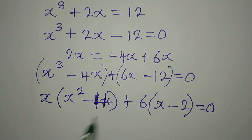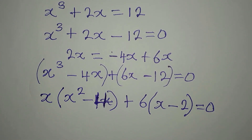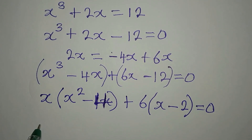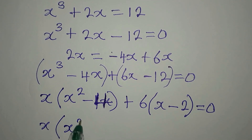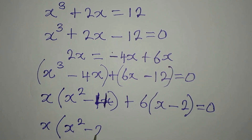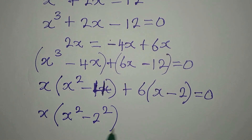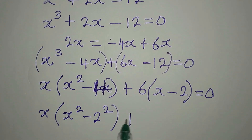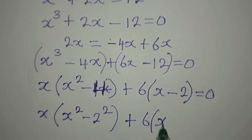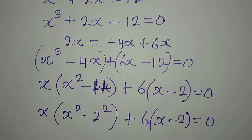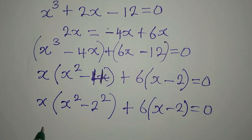We can now apply the difference of two squares to x squared minus 4, since 4 is 2 squared. So we have x(x squared minus 2 squared) plus 6(x minus 2) equals 0, which gives x(x minus 2)(x plus 2) plus 6(x minus 2) equals 0.